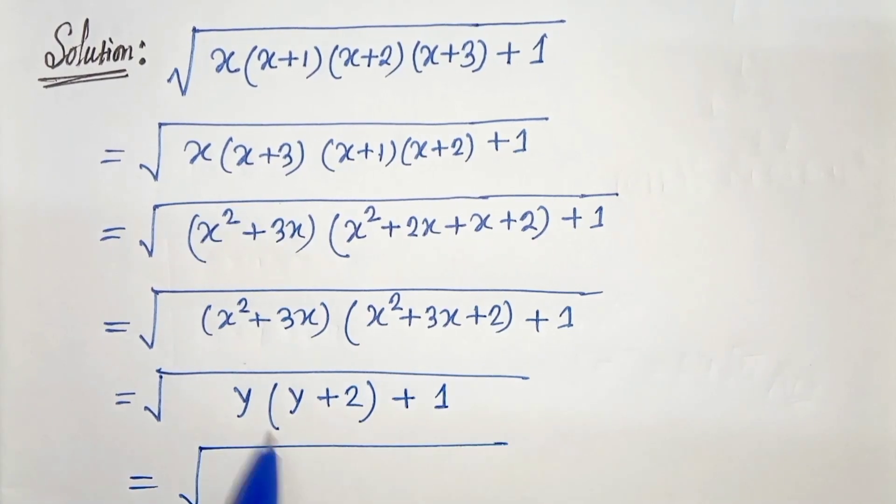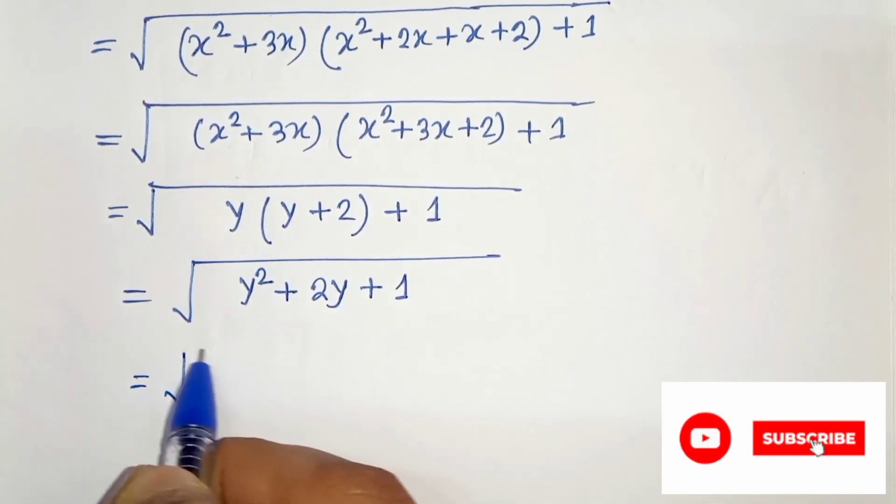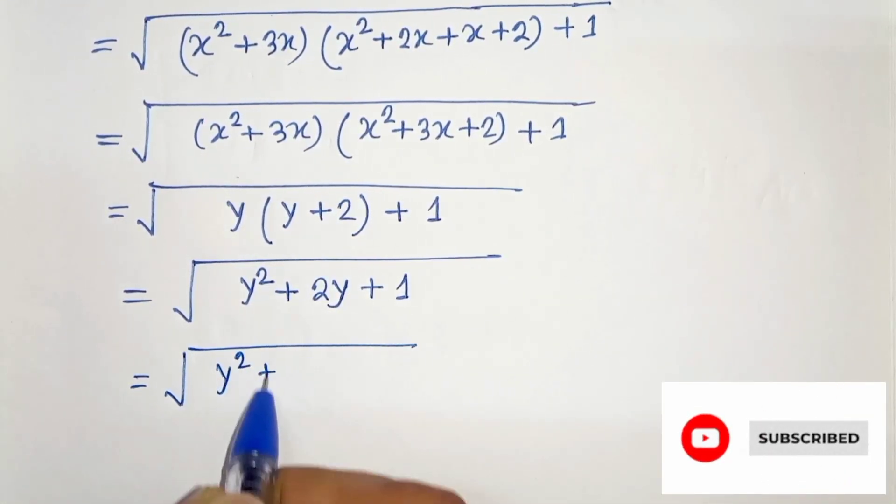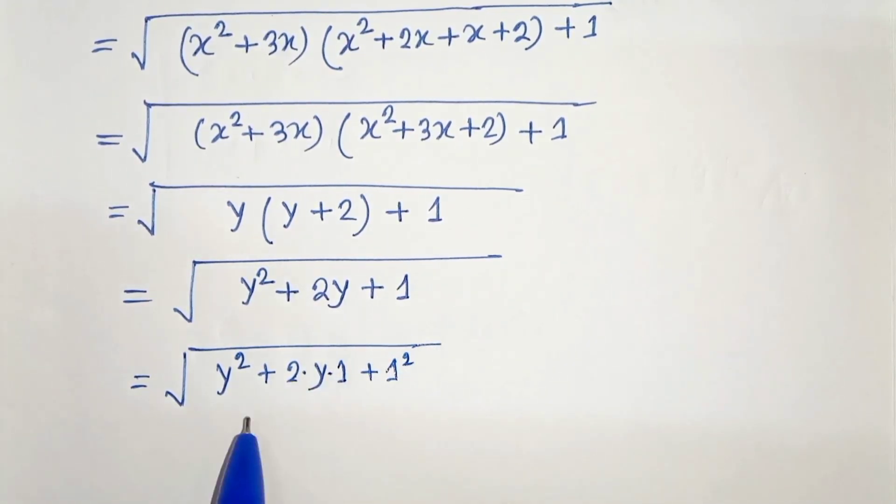In the next step, y squared plus 2y plus 1. And this is nothing but y squared plus 2 times y times 1 plus 1 squared, which is a plus b whole squared.